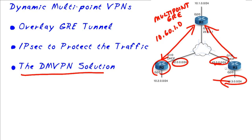R2 says: I'd like to talk to R3 and build an IPsec tunnel directly to him. Could you give me the Next Hop or the global address of R3? R1 feeds that to R2, and then R2 builds the IKE Phase 1 and IKE Phase 2 policies that are part of IPsec directly. Then we can use GRE traffic directly between R2 and R3.